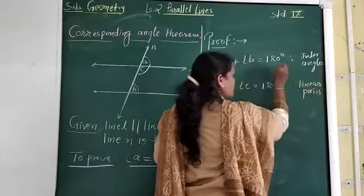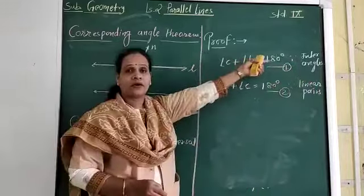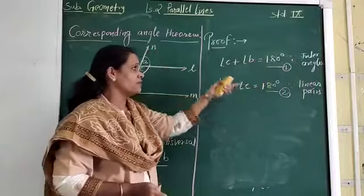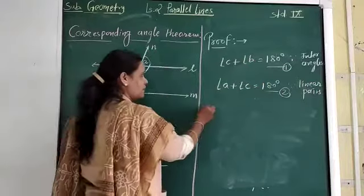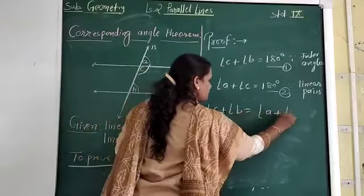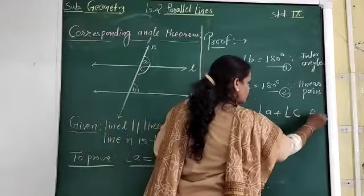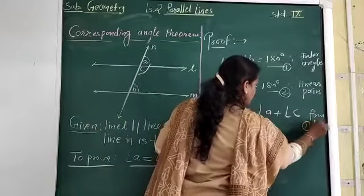Now if you give this equation 1 and this as equation 2, the right hand side of these two equations is same. So the LHS will be same. It means angle C plus angle B is equal to angle A plus angle C. This is from where? This is from 1 and 2.